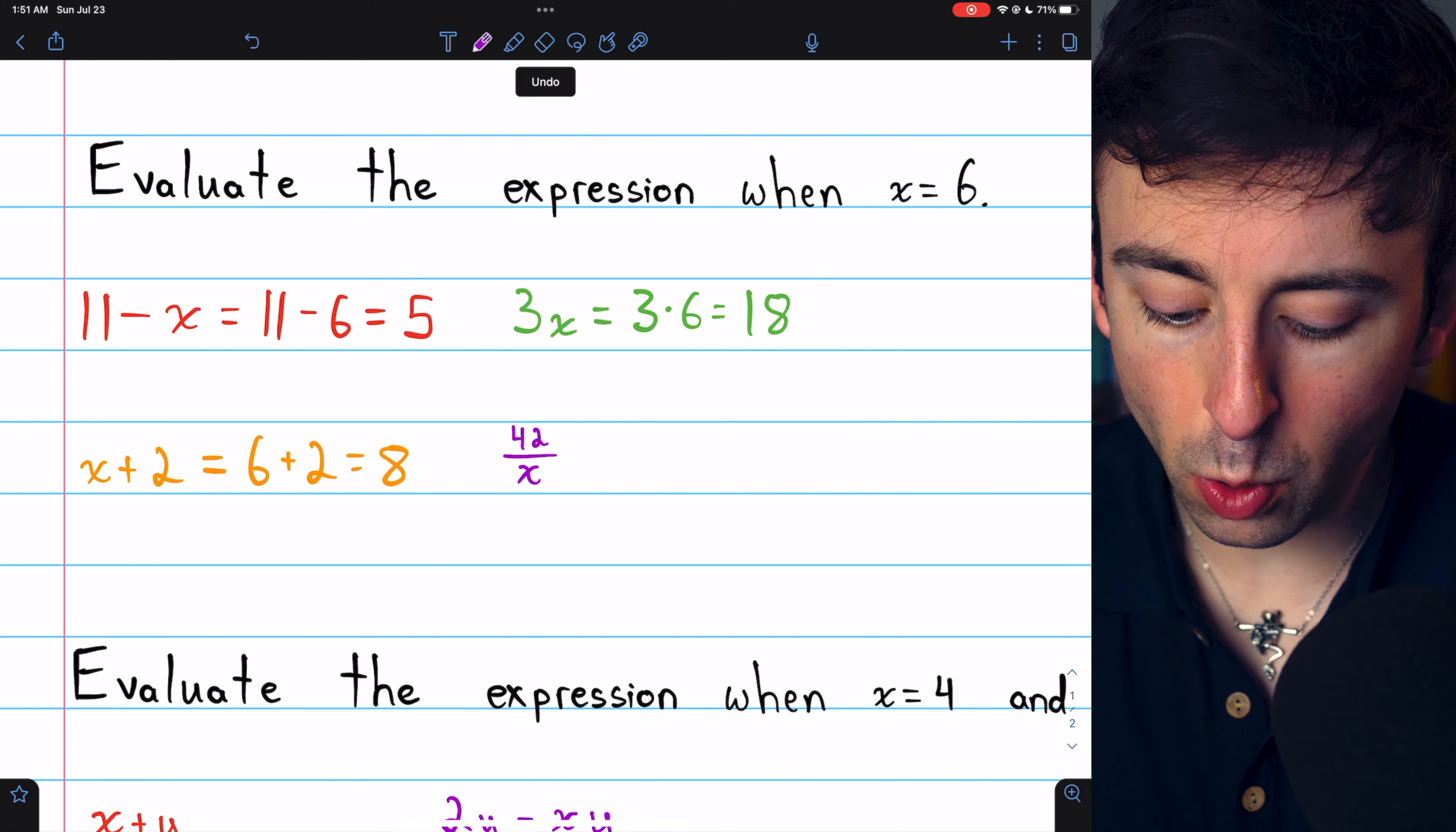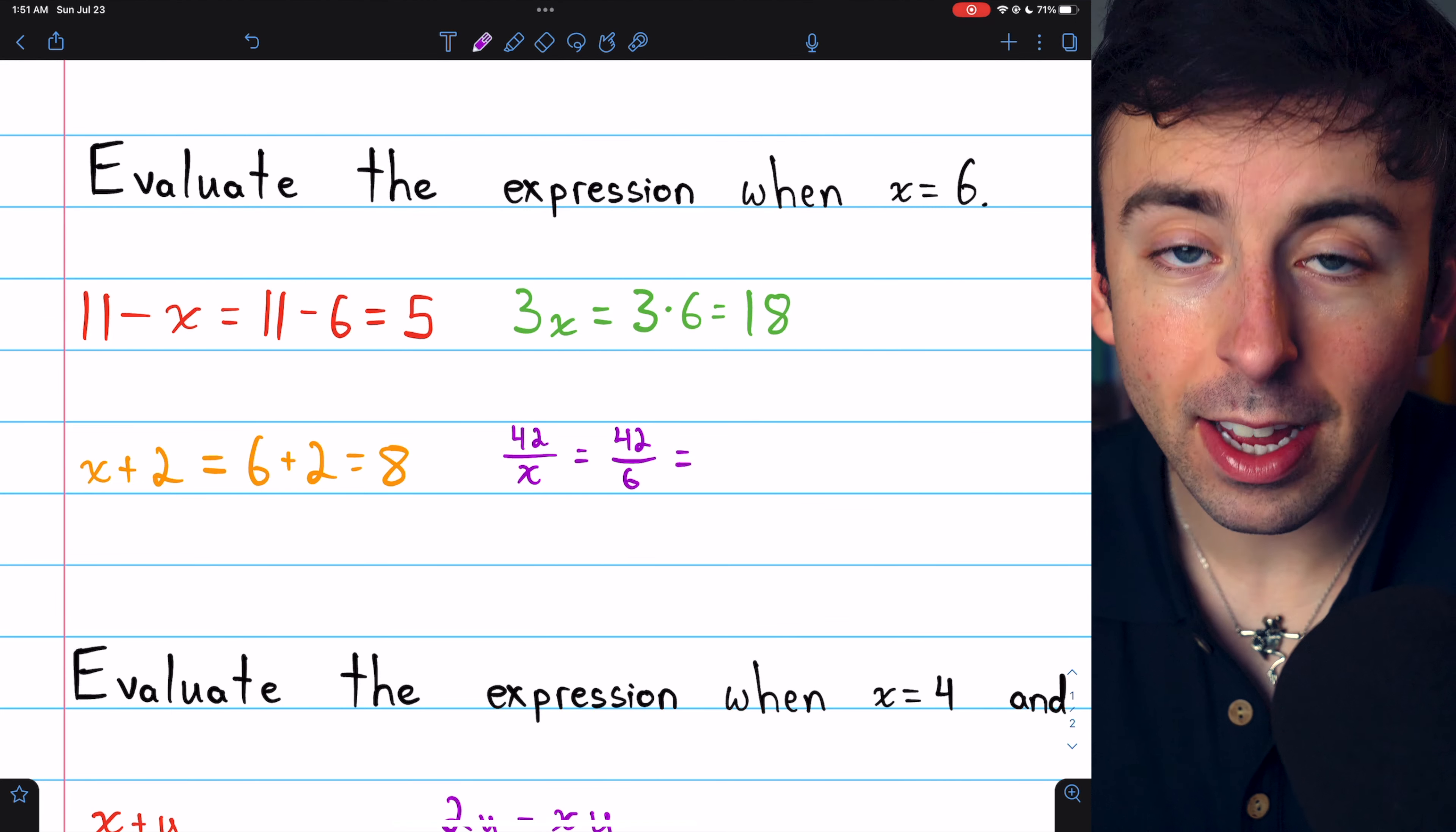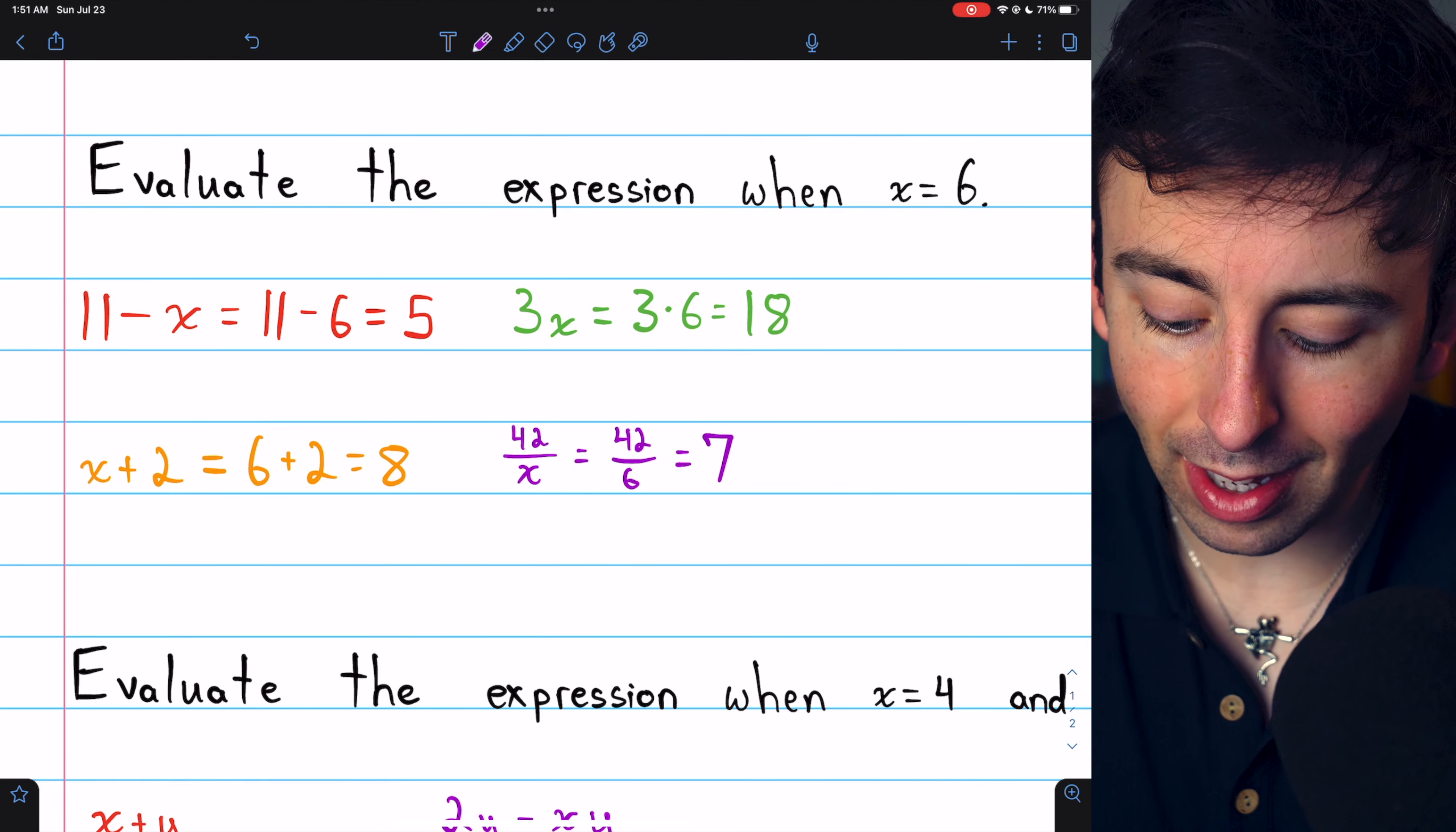Then 42 over x. x is 6, so this is 42 over 6. 6 goes into 42 seven times.